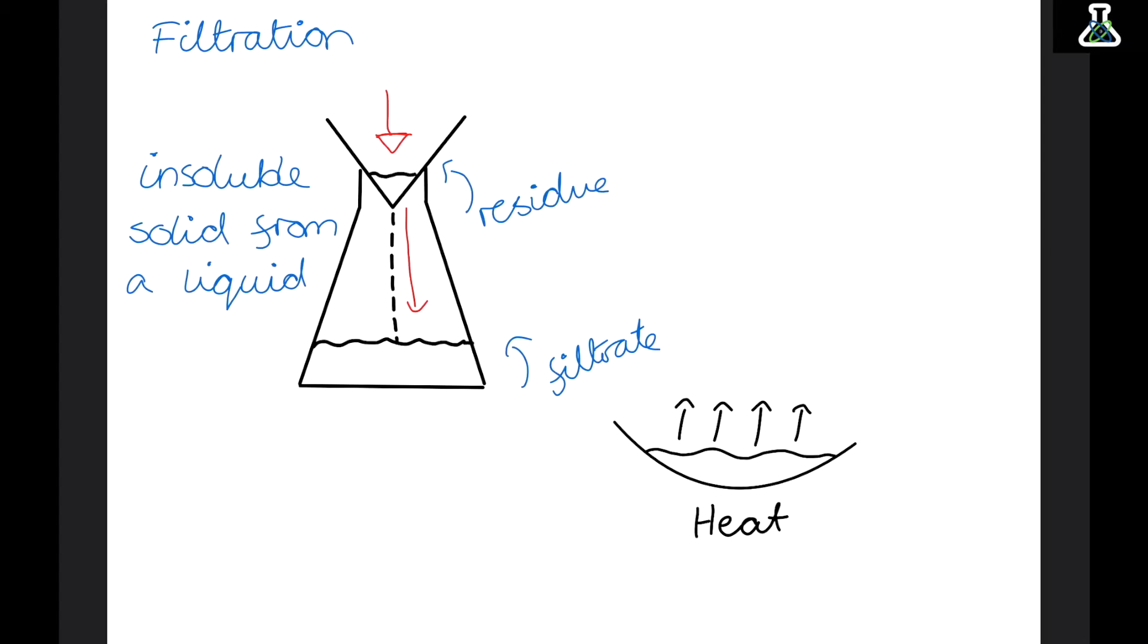Another method is then crystallisation. And this separates a soluble solid from a liquid. So a solid that is dissolved. Now filtration won't work in this case. Because the solid is dissolved it will just pass straight through the gaps. So instead we heat it up until the liquid begins to evaporate leaving the solid behind as crystals.